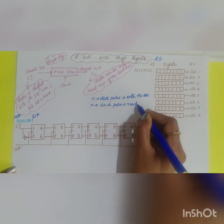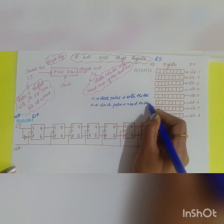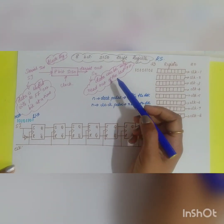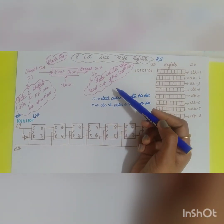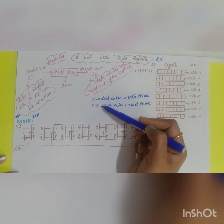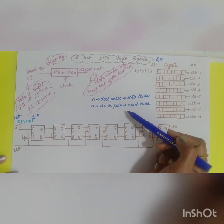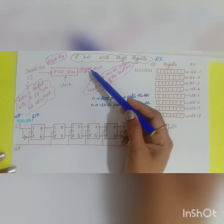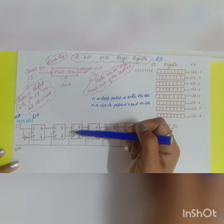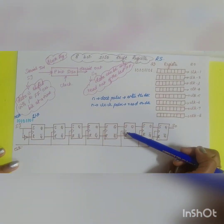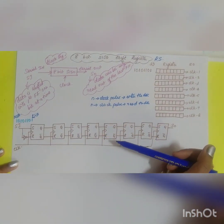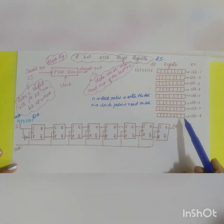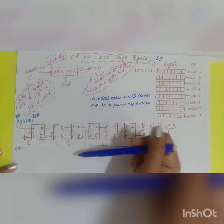To read the data it takes another n clock pulses. If it is a 4-bit shift register then it requires 4 clock pulses to enter the data and another 4 clock pulses to read the data. So in this 8-bit case, it requires 8 clock pulses to enter the data and another 8 clock pulses to read the data. That is one of the disadvantages.